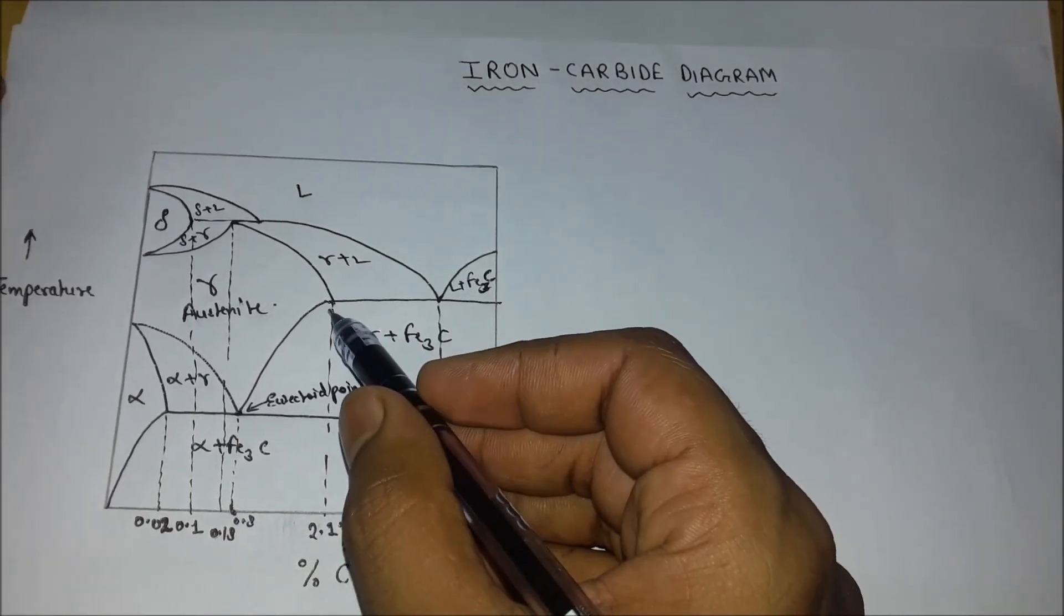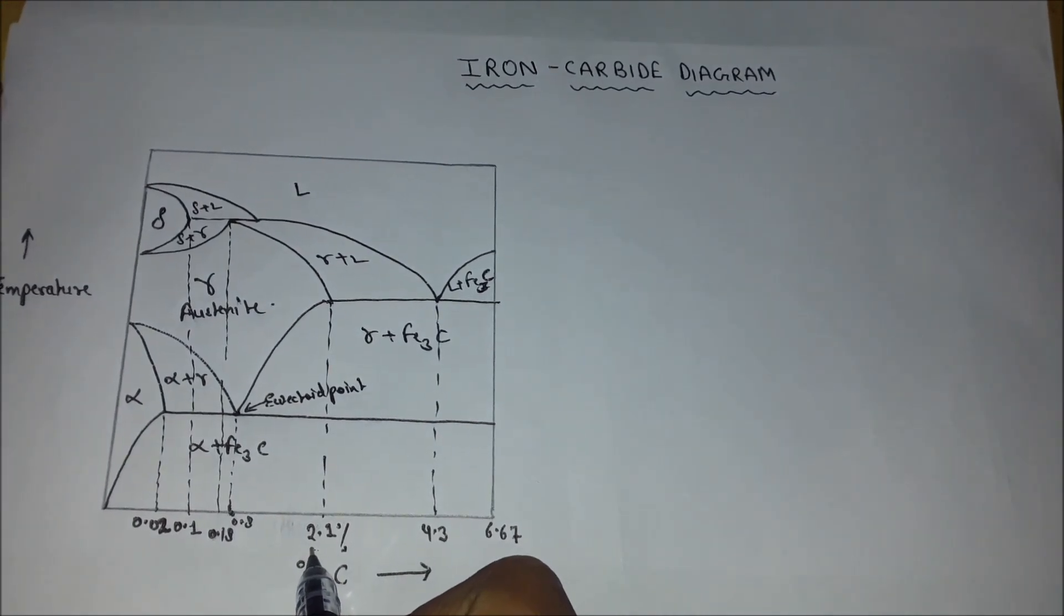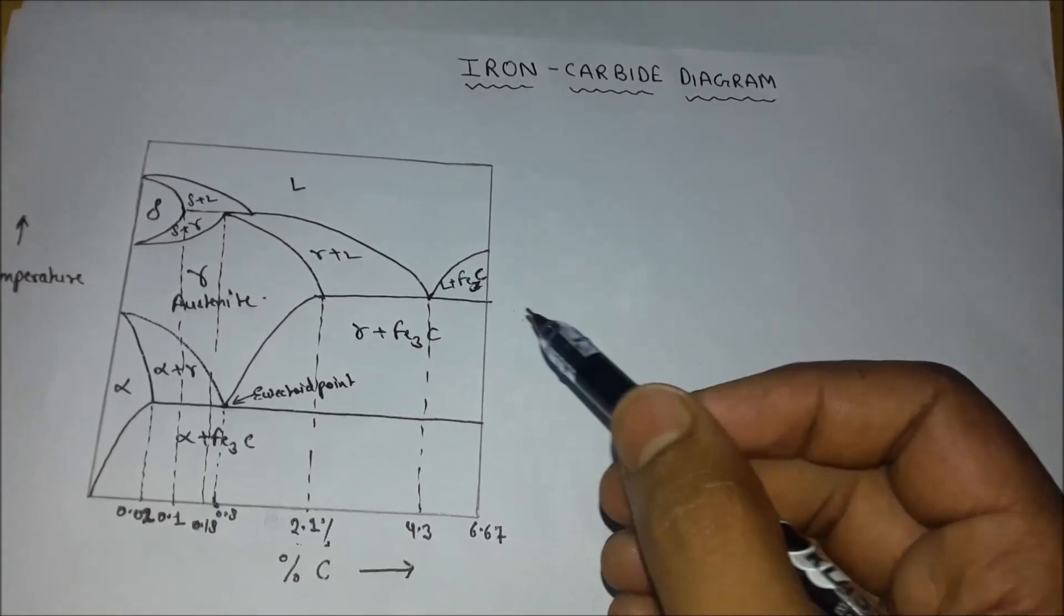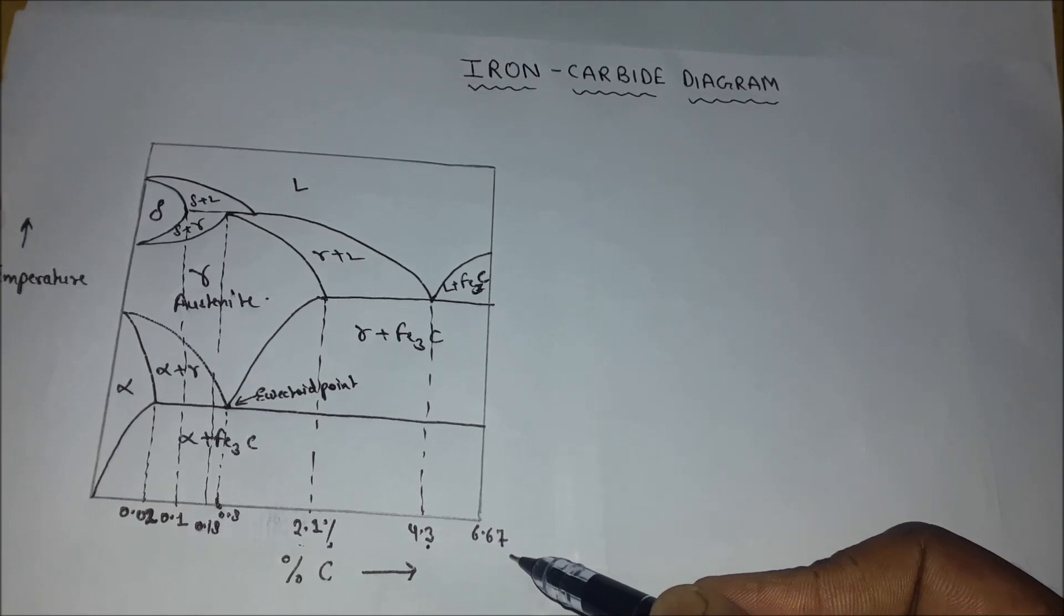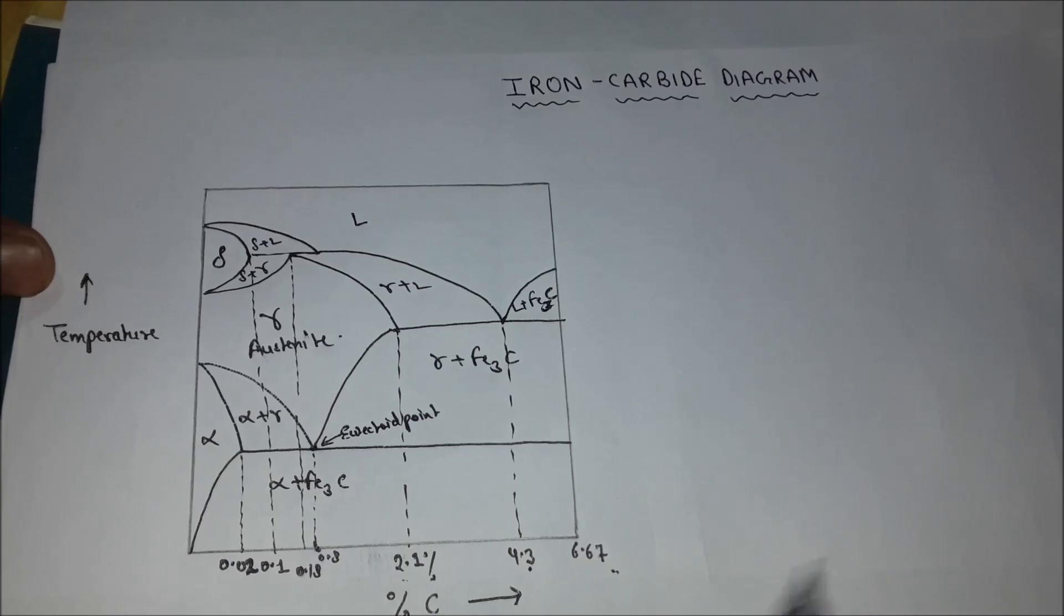The maximum solubility of carbon in austenite is 2.1%. And here 4.3%. And the maximum solubility of carbon in iron is 6.67%.